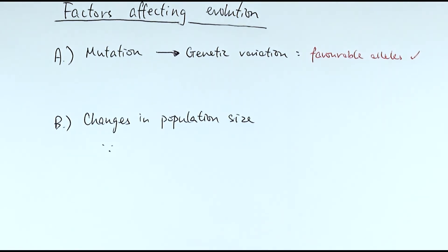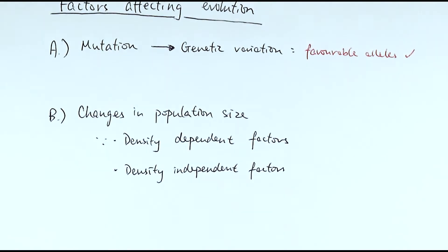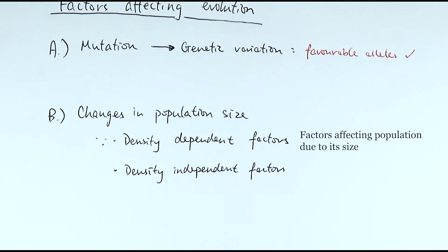Another factor would be changes to a population size. There are two major types: density dependent factors and density independent factors. Density dependent factors are things that are affected because of the size of a population — for example, competition and predation. These are two things that would actively be affected by the original population size.